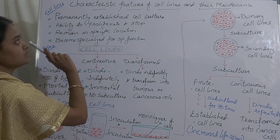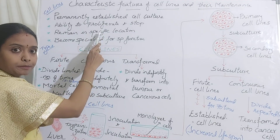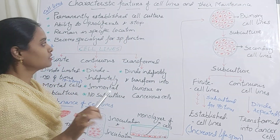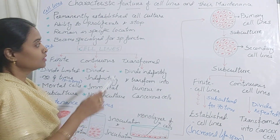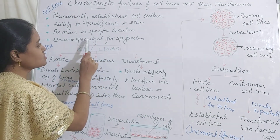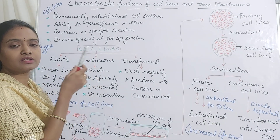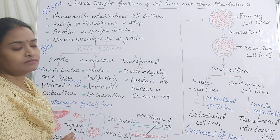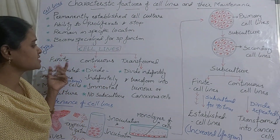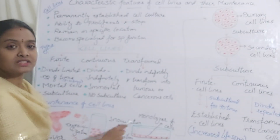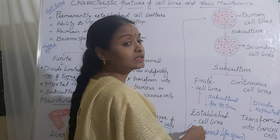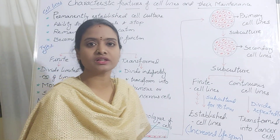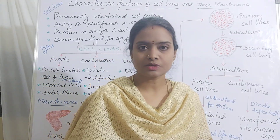Their main character is they are permanently established, highly proliferating, and stop when required or stop according to their genetics. If you are taking the kidney cell, the kidney cell will attain its own function — specialized cells will have specific function. So here you have the finite cell, continuous cell, and transformed cell, and how you are going to subculture and maintain them for more than 70, 80, and 90 cycles. If you have any doubts, put it in the comments and subscribe for further videos.